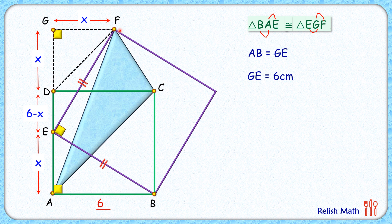Now let's join DF here. If you look at this triangle GDF, it's a right angle isosceles triangle, and thus this angle here will be 45 degrees. Also, with respect to the green square, AC is the diagonal, so this angle here will be 45 degrees.